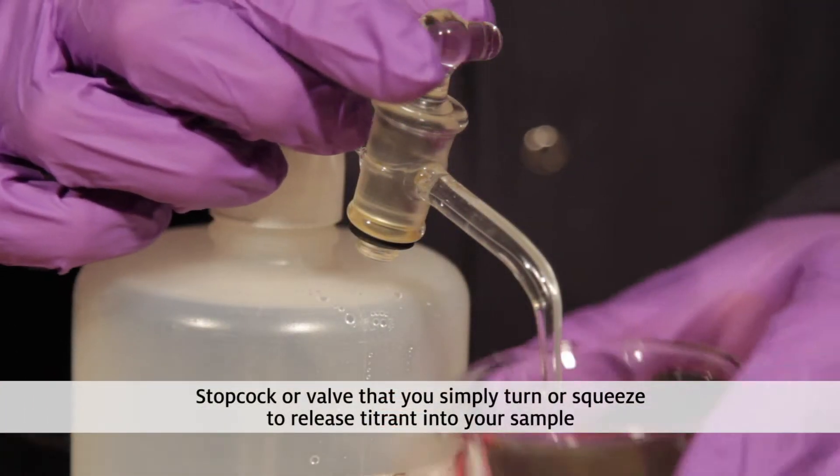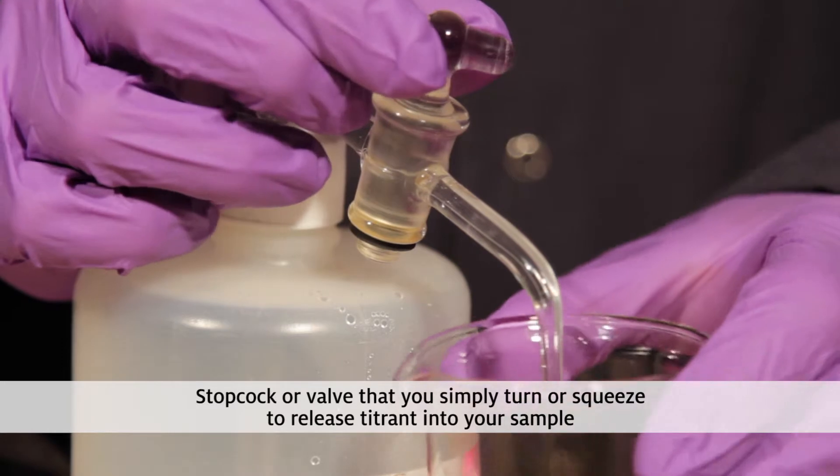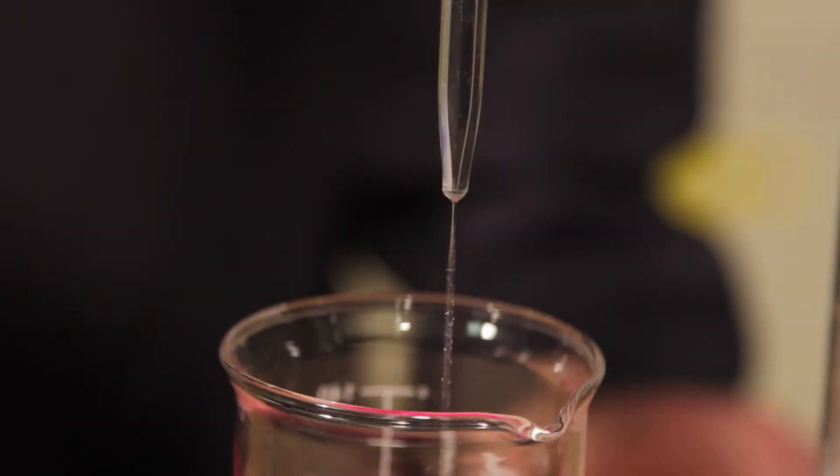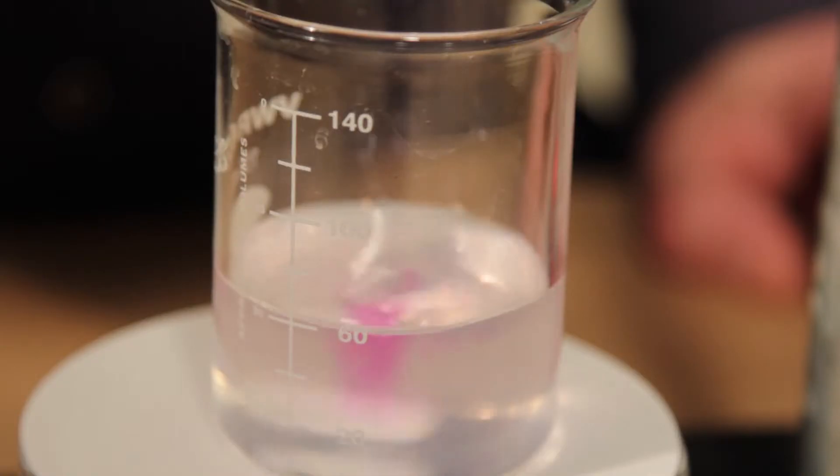At the bottom, there is a stopcock or valve that you simply turn or squeeze to release titrant into your sample. With a little practice, you will learn how to control the valve to release a rapid stream or squeeze out a single drop to perfectly hit the endpoint every time.